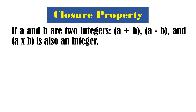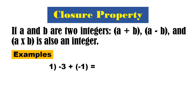The first property is the closure property. If A and B are two integers, the sum of A and B, the difference of A and B, and the product of A and B is also an integer. Example: we have negative 3 plus negative 1. Negative 3 is an integer, negative 1 is an integer. Therefore, their sum is also an integer — that is negative 4.